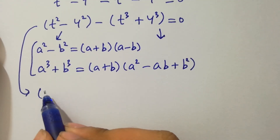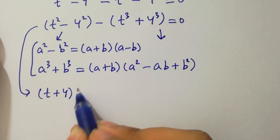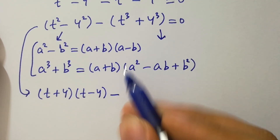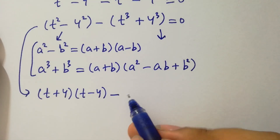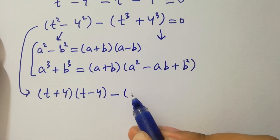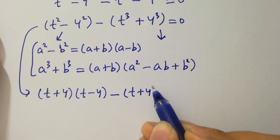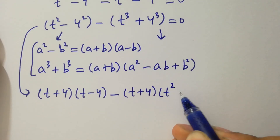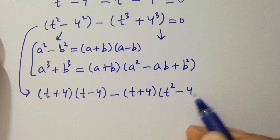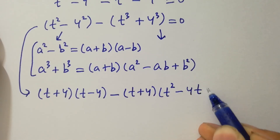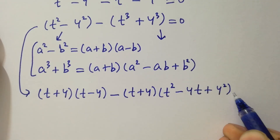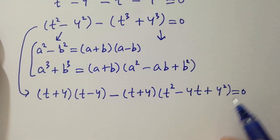So, t squared minus 4 squared gives t plus 4 times t minus 4. And t cubed plus 4 cubed gives t plus 4. So we apply these factorizations to our grouped expression equal to 0.